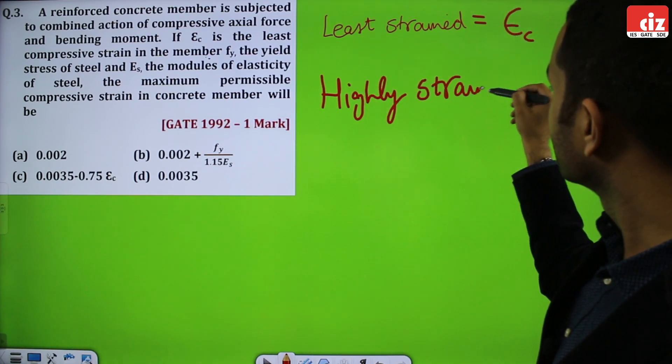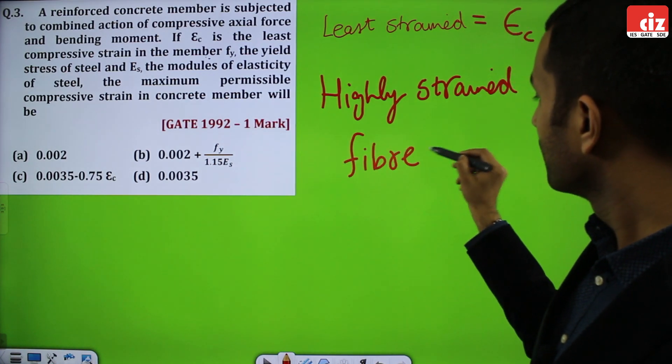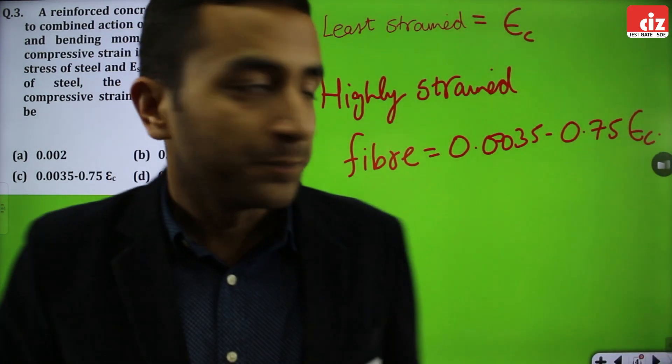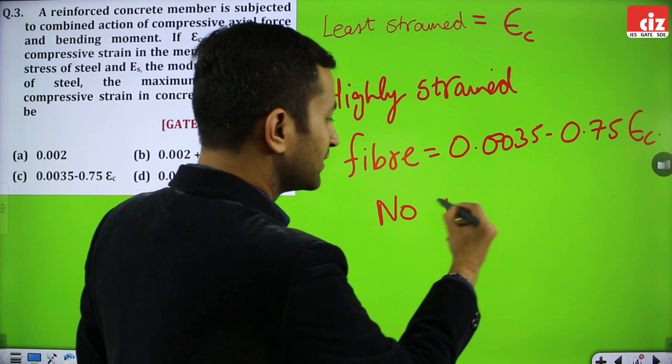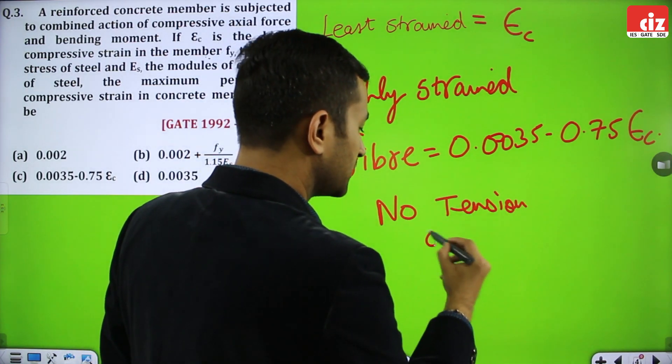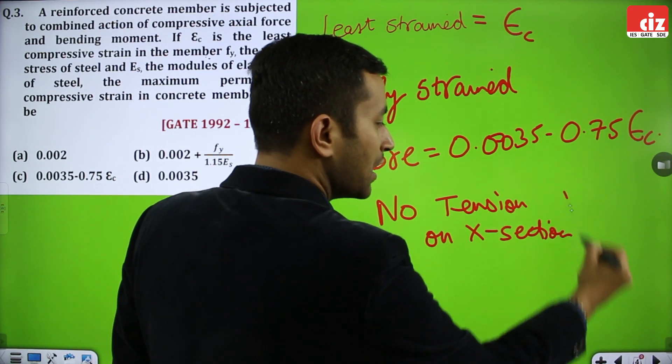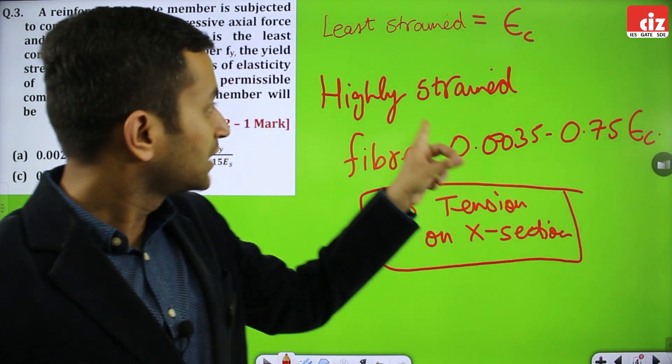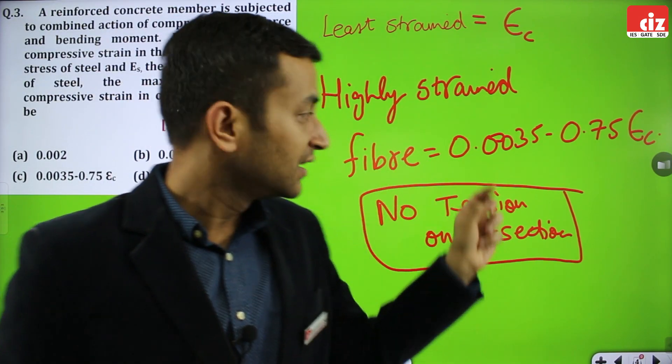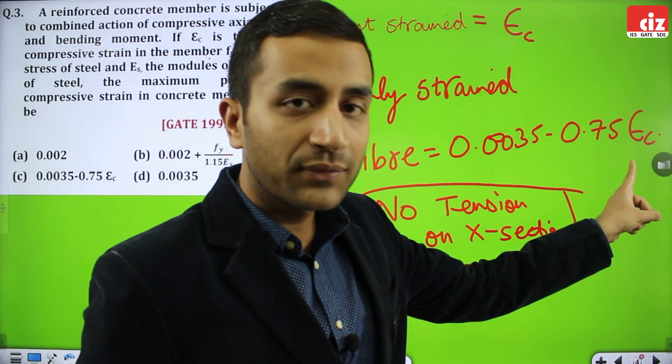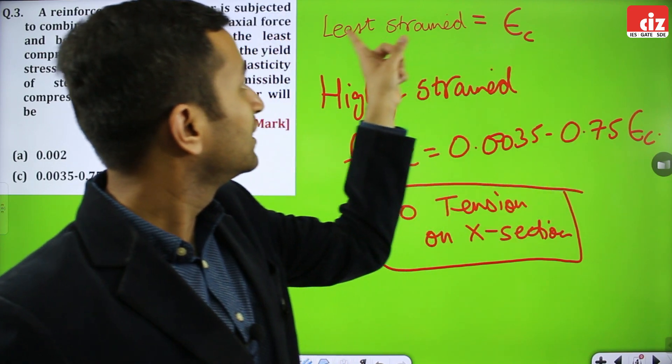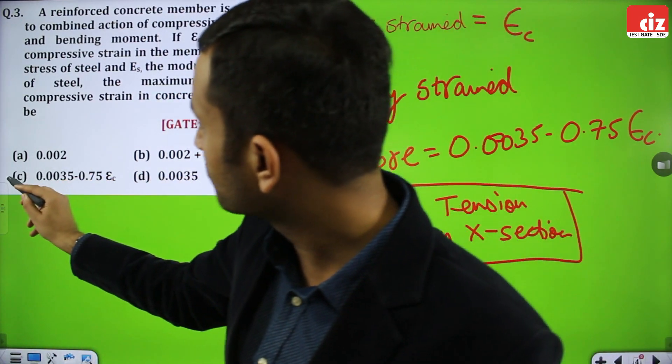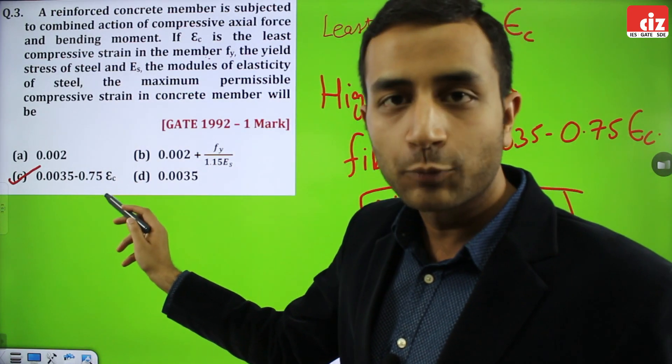This is a clause of IS 456-2000. If least strain fiber has strain epsilon C, then highly compressed fiber will have stress 0.0035 minus 0.75 epsilon C. You have to remember this. This holds true only when there is no tension on the section, on the cross section. If there is any tension, then this formulation will not hold. But if section has no tension, then you can see that highly strained fiber will have strain 0.0035 minus 0.75 of epsilon C. The simple option is option number C: 0.0035 minus 0.75 epsilon C.